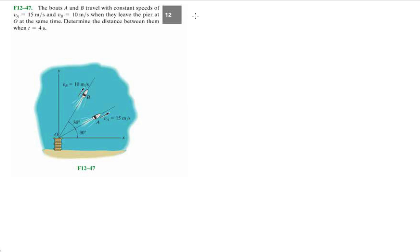One of the many equations that they introduce in this chapter is the 2D relative motion equation, which is the velocity of B is equal to the velocity of A plus the relative velocity between them both. So it's going to be the velocity of B with respect to A. We need to determine the distance or the velocity of B with respect to A.